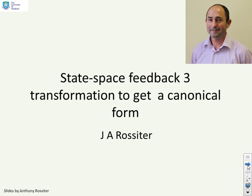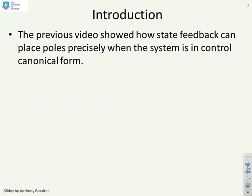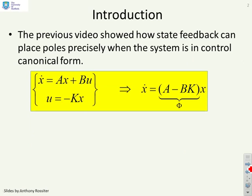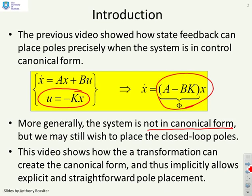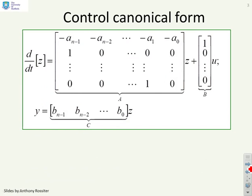The previous video introduced state feedback with canonical forms. This video looks at transformations to enable you to get into a canonical form. We showed state feedback can place poles precisely when the system is in control canonical form. This video shows how you can create a similarity transformation which will allow you to get the canonical form from a non-canonical form, and thus implicitly allow you to do pole placement.